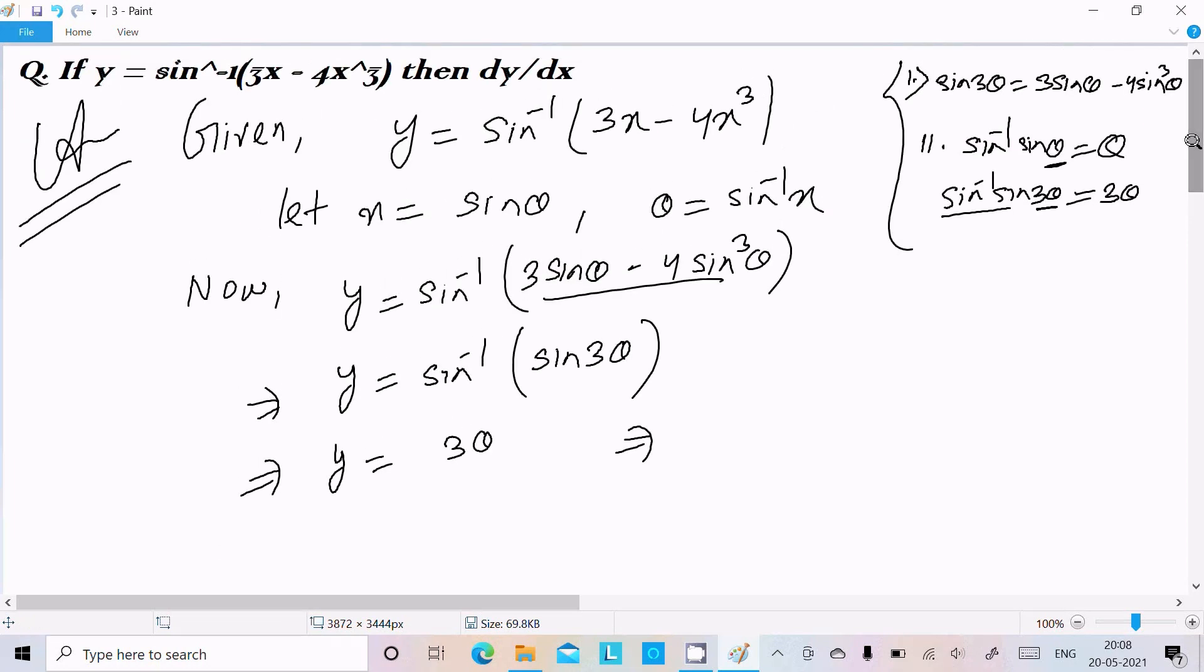Now, I assumed x = sin θ. So when sin moves to the right side, it changes to inverse. Here θ = sin⁻¹x. Therefore y = 3 sin⁻¹x.